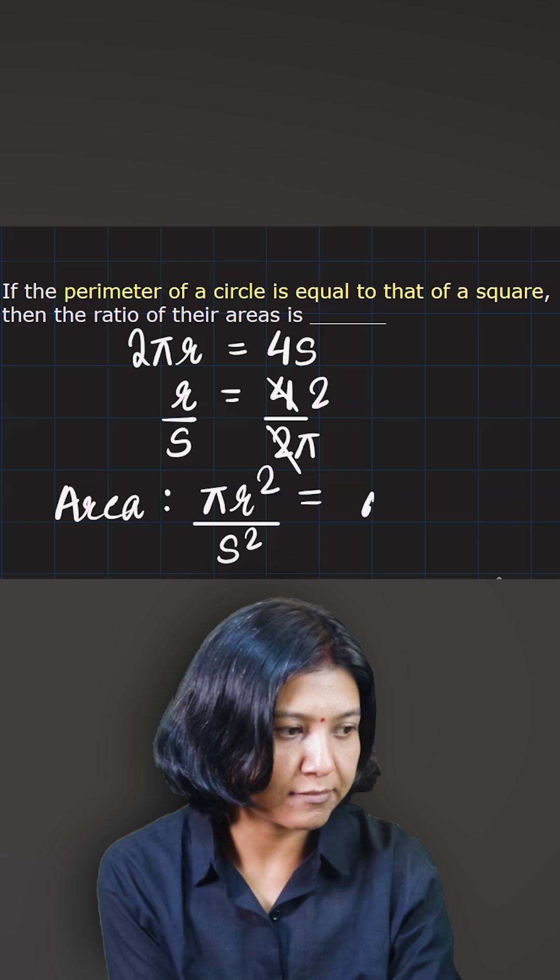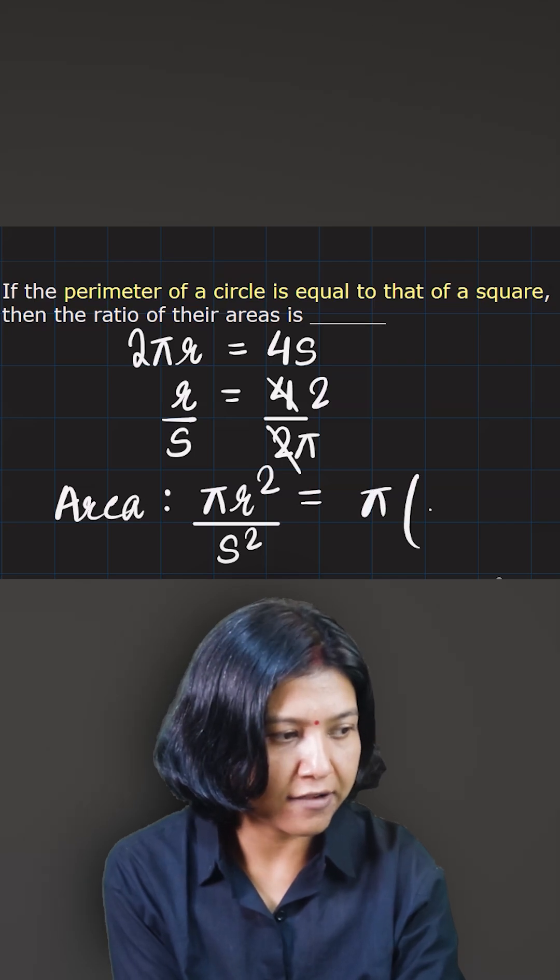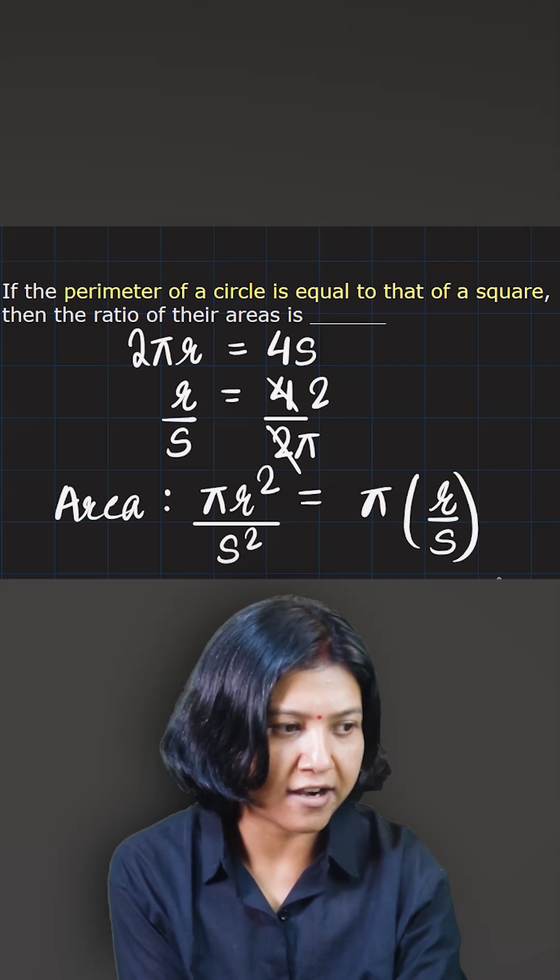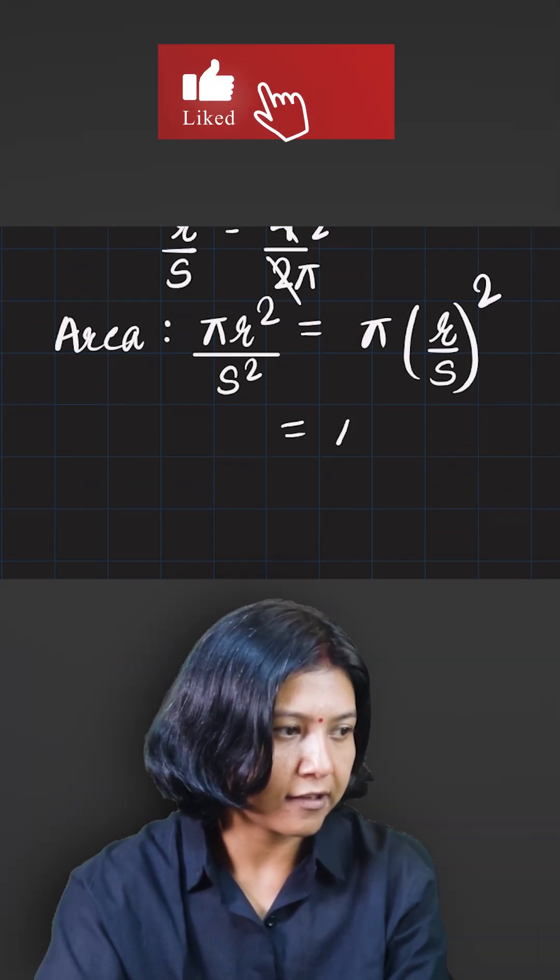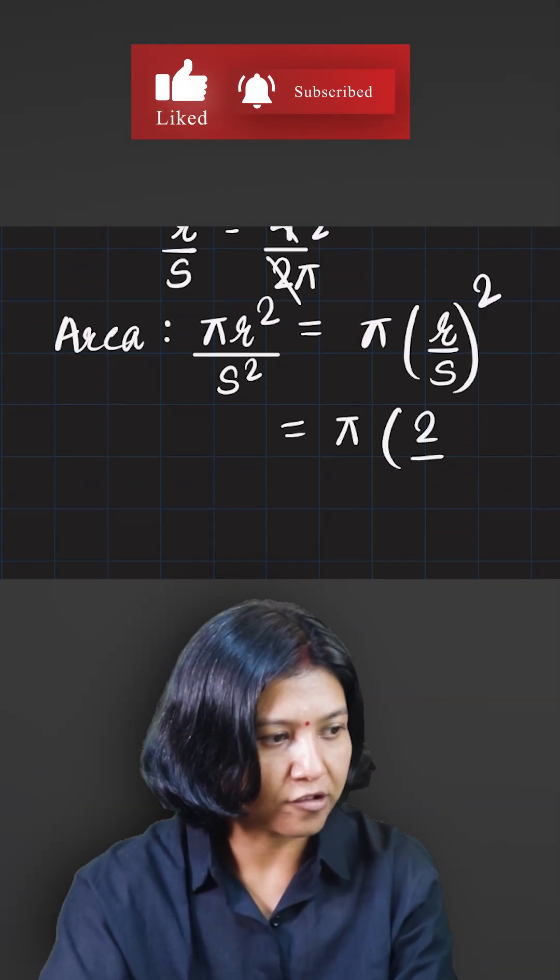And now how can you simplify? Keep this π aside and then you have r and s, the ratio of r to s, the whole squared. We got the ratio as 2/π, so I'm going to write that: π times (2/π)².